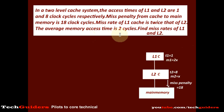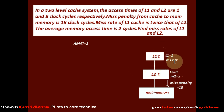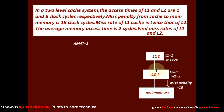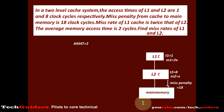The average memory access time is given as 2 clock cycles, and we need to find the miss rates for L1 and L2. This is a 3-level memory hierarchy. The miss penalty to the last level is known, and the hit time and miss rate for the other two levels are known, so we can use the equation hit time plus miss rate times miss penalty recursively, starting from the upper level.